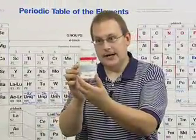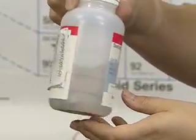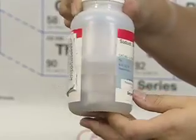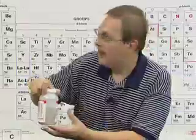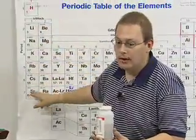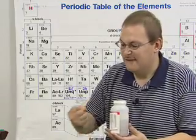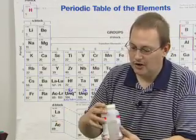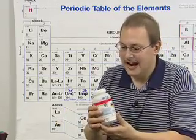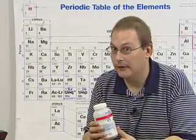Starting with sodium — that's this right here. You might be able to see how the sodium is actually inside some sort of liquid. This is mineral oil. The reason we have to keep sodium and all Group 1 metals under oil is because if they get exposed to air, they're going to oxidize very fast and the whole batch would be ruined very quickly. In fact, it could even catch fire. Metal fires are really, really bad because they're very hard to put out.